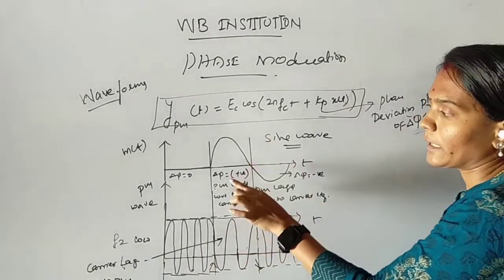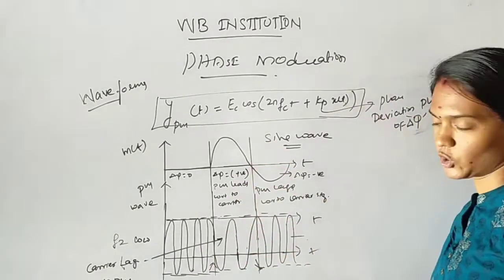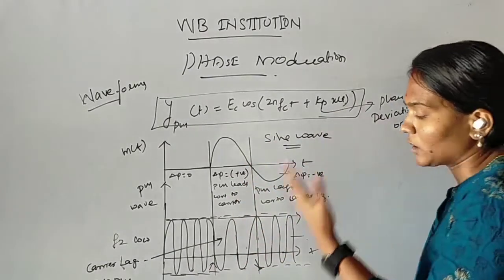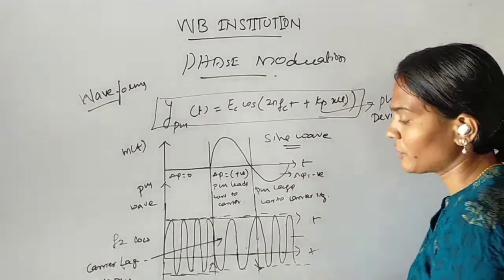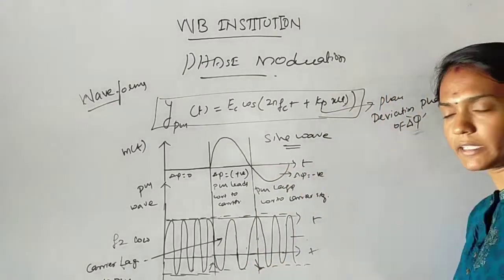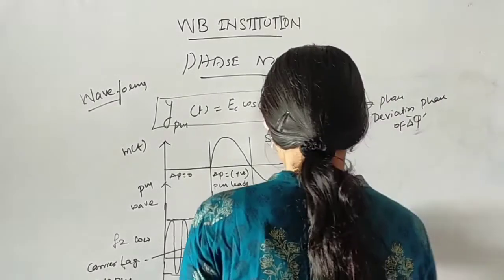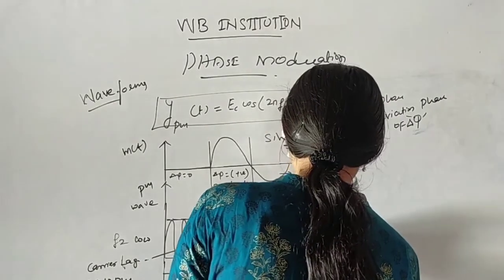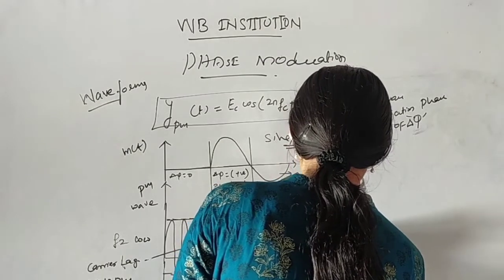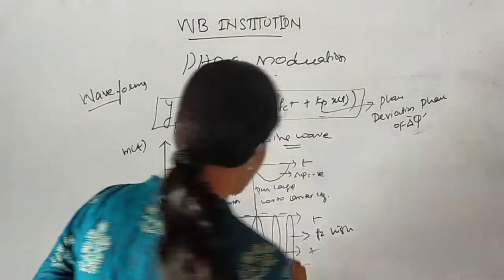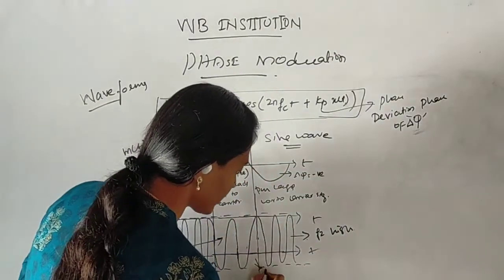When Δφ is negative, the frequency becomes higher. When Δφ is positive, the frequency is lower. This is the key difference between positive and negative phase deviation in terms of frequency behavior.